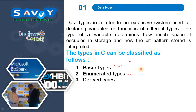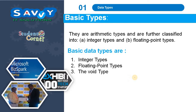The categories are: enumerated datatypes or user-defined datatypes, and derived datatypes. Basic datatypes are arithmetic types and are further classified into integer types and floating point types, and the void type.